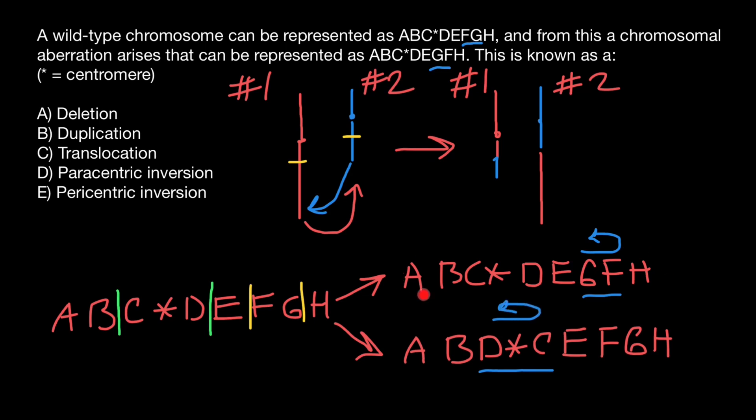And as you see, the major difference between these two inversions is that this inversion doesn't include centromere, and this inversion includes centromere. So we call this type of inversion paracentric inversion, and this type of inversion, which includes centromere, pericentric inversion.